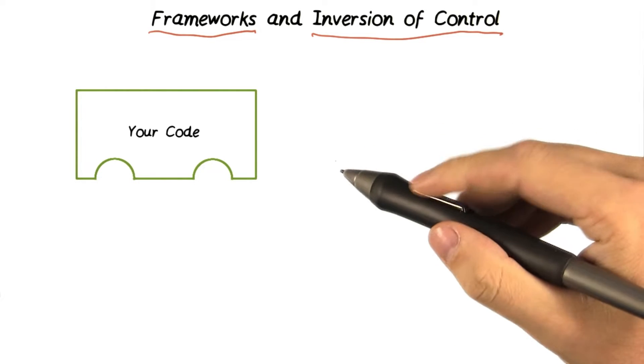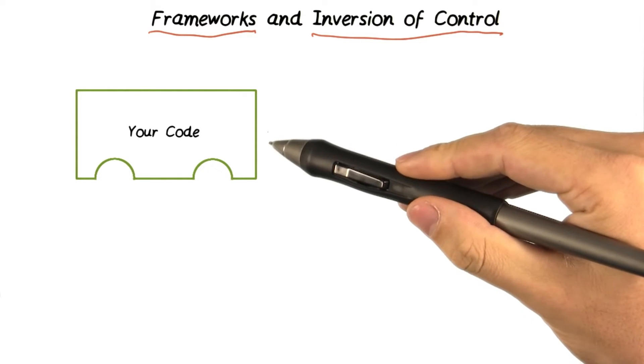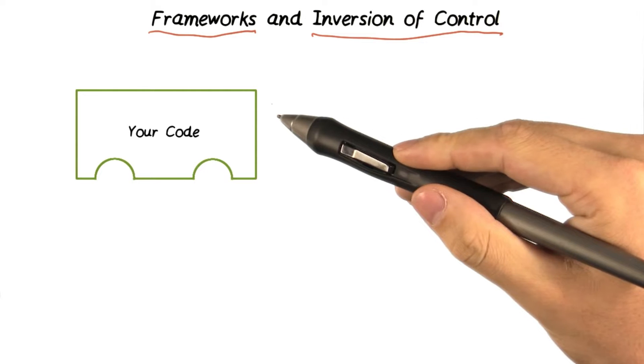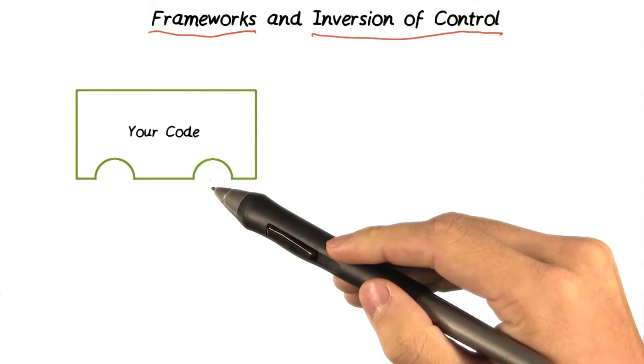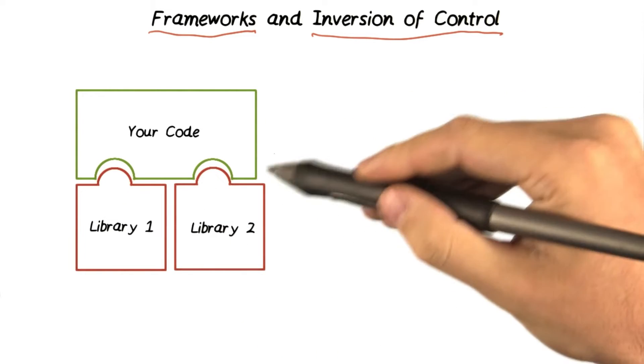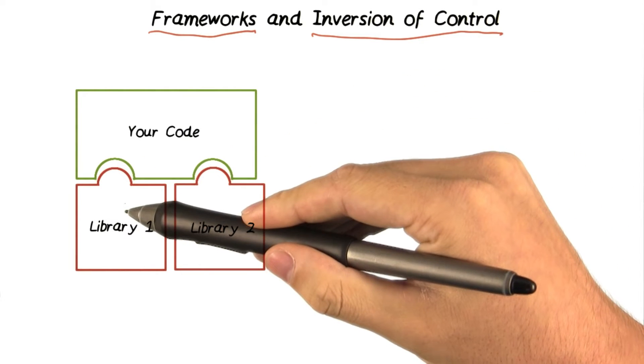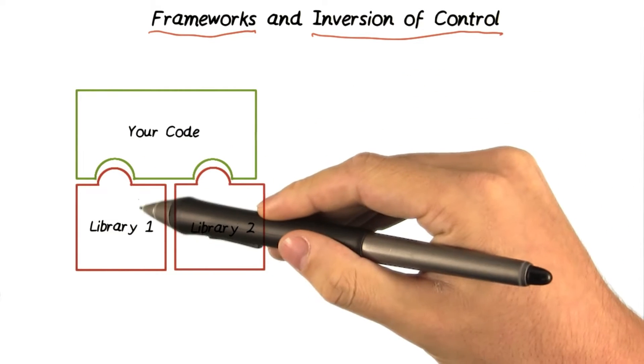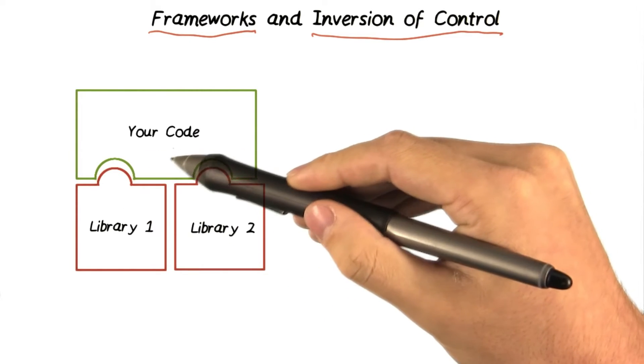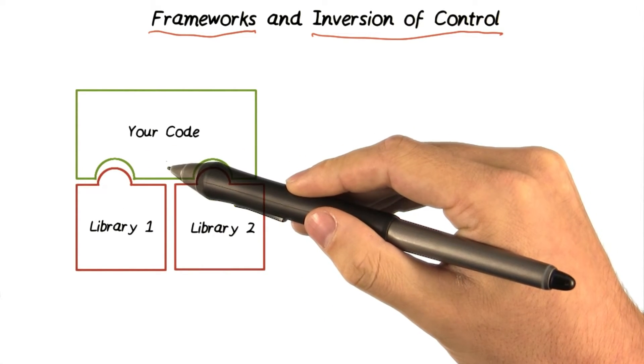When you're using libraries, you've got your code that is doing most of the work. However, you have a couple of places where you're going to need some help. So you plug in a couple different libraries, your code's running along. You call into one of the libraries for help with something specific, like drawing or playing a sound. And then your code resumes control and keeps doing what it's doing.